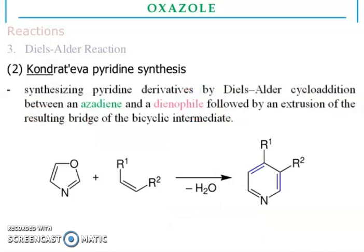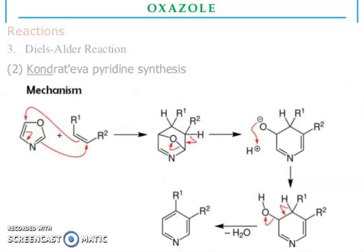Conduct of a pyridine synthesis: synthesizing pyridine derivatives by thermal cycloaddition between an azadiene and a dienophile, followed by the extrusion of the resulting bridged bicyclic intermediate. You can see the formation of pyridine through oxazole — this is the mechanism.